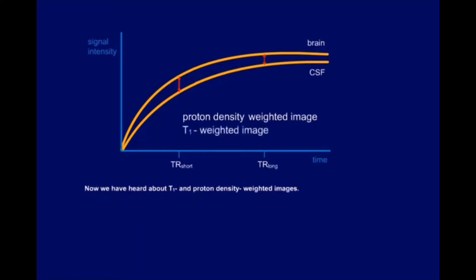Now we have heard about T1 and proton density weighted images. How do we obtain a T2 weighted image? This is a little more difficult to understand.